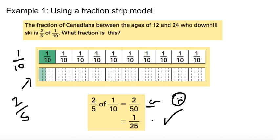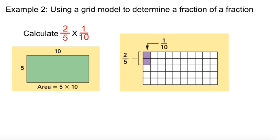Next example, using a grid model to determine a fraction of a fraction. So it says calculate two-fifths times one-tenth. You see a grid here and you see the area is five times ten. Where am I getting the five or the ten? Well five right here and ten from the denominator is right here. So area's five times ten.